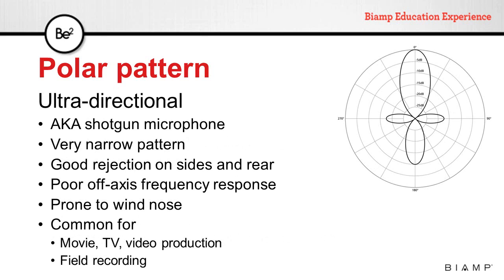Another pattern is the ultradirectional pattern, also known as a shotgun microphone. As you can see in the graph, this pattern is very narrow at the front and can have several smaller lobes on the sides and the back of the microphone. They have very good rejection on the sides and the rear, and have very poor off-axis frequency response. They are very prone to wind noise, which is why we usually find them inside a windscreen called a zeppelin. They are very common for movie, TV, video production, and also for field recording.